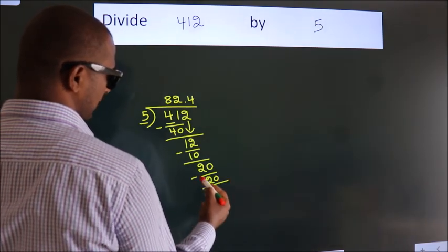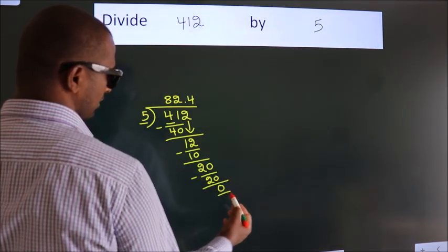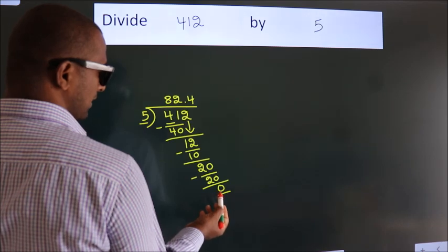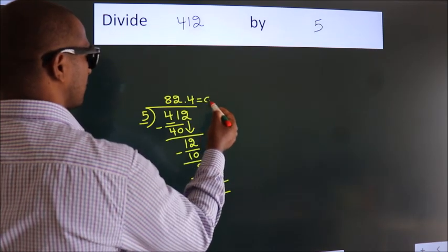Now we subtract and get 0. We got remainder 0, so this is our quotient.